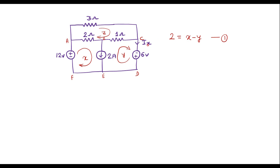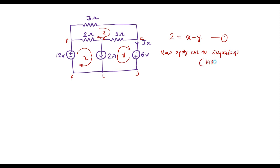Once we analyze the current source, we are supposed to assume that this current source is removed from the circuit. If we assume this current source is removed, we find only one loop — A, B, C, D, E, F — and that entire loop is known as the super loop. So now we have to apply KVL to the super loop, assuming that the 2 amp branch is not present. That single loop A-B-C-D-E-F is the super loop.